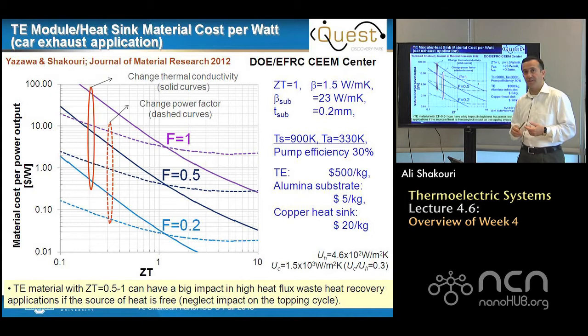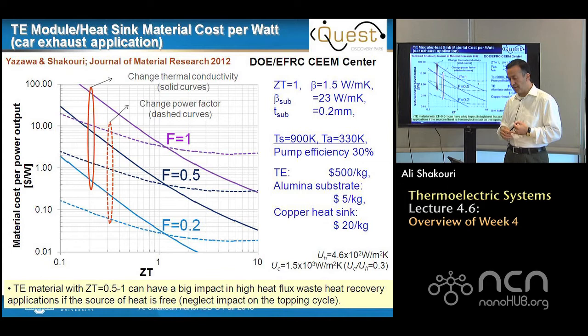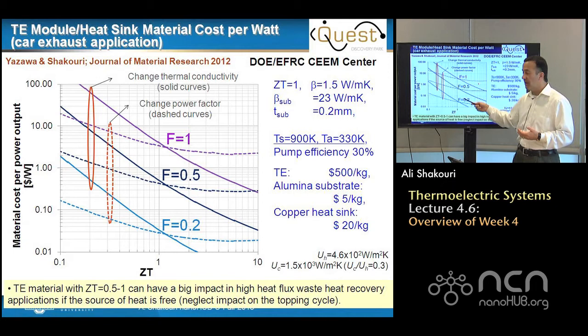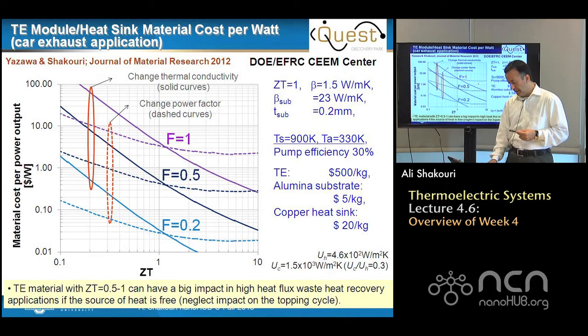That's actually quite similar to the case of concentrated solar applications. There they use multi-junction solar cells that are much more expensive, but because you use mirrors and only need a tiny amount of multi-junction solar cell, it's not prohibitive. For thermoelectrics, you can do that with heat concentration, and you don't even have to worry about tracking because the heat spreading in the thin films of the module takes care of sending the heat to the thermoelectric device.